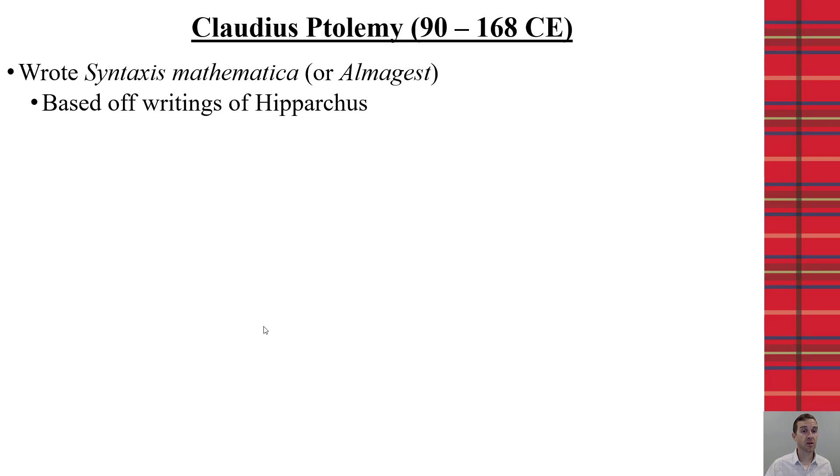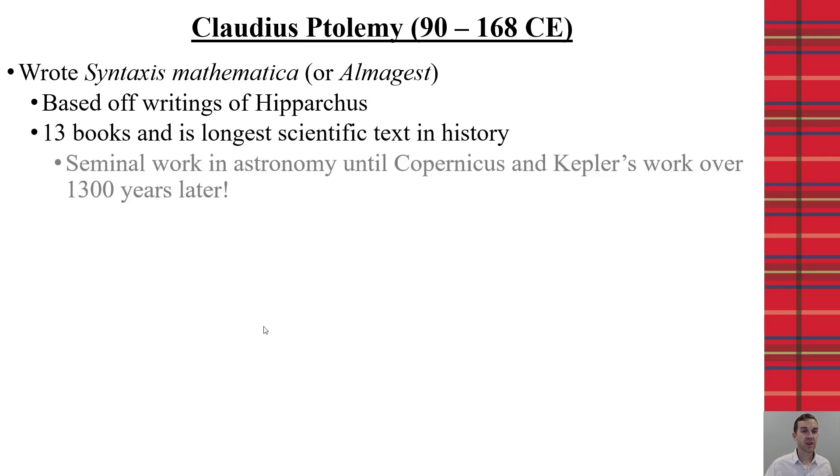Also, Claudius Ptolemy is known to have created the Almagest, which was also based off the writings of Hipparchus. And he created 13 books, which is considered the longest scientific text in history, and was the primary work used in astronomy until Copernicus and Kepler, which were well over 1,300 years later.